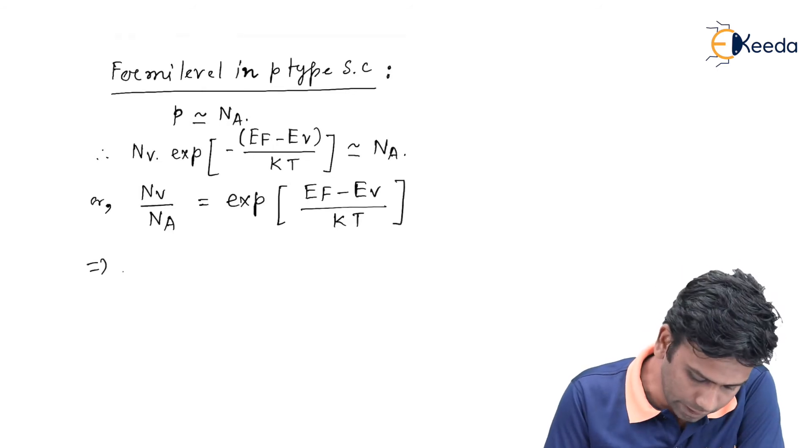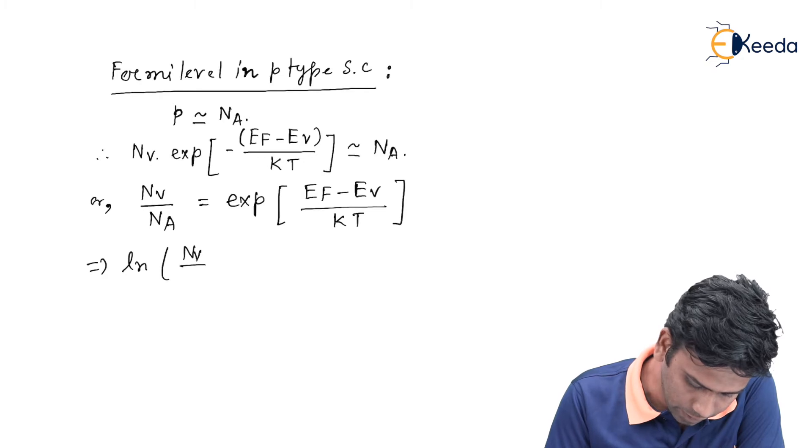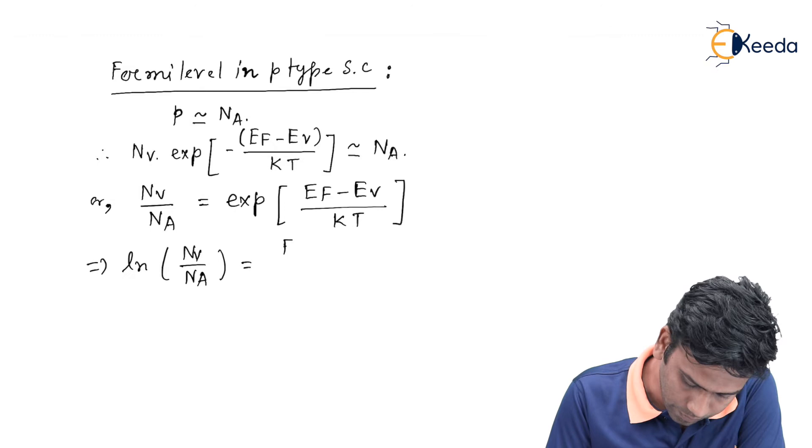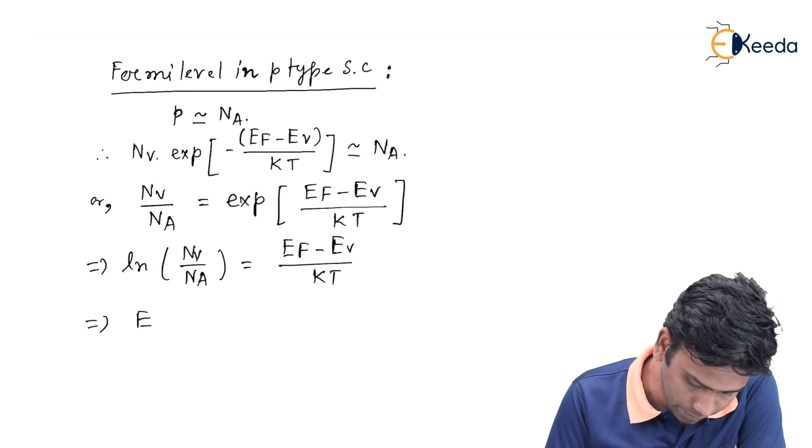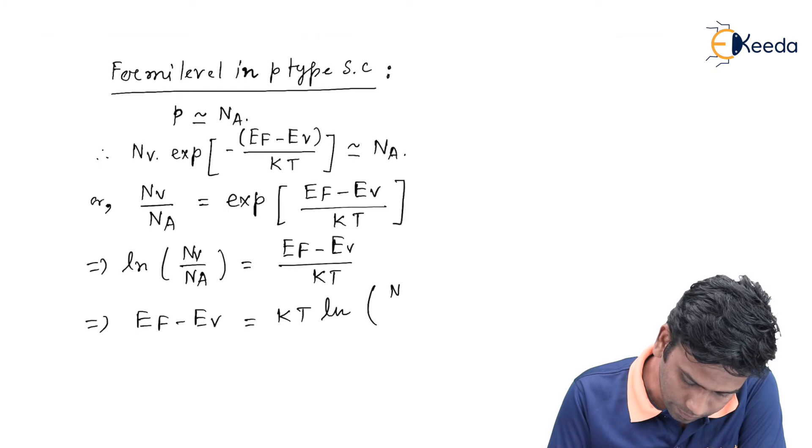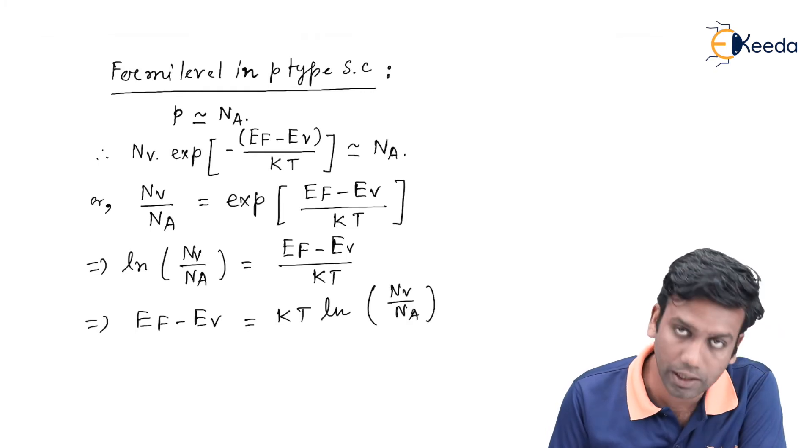Let us take ln on both sides, that is ln of Nv by Na, it will be EF minus EV divided by KT. So EF minus EV is equals to KT ln Nv by Na.